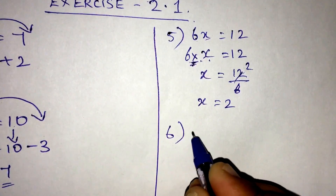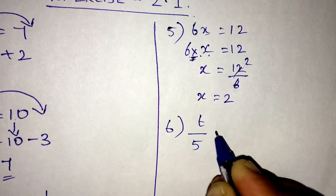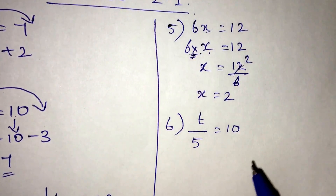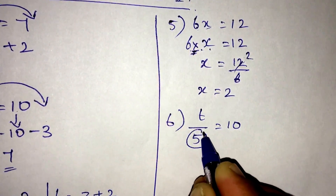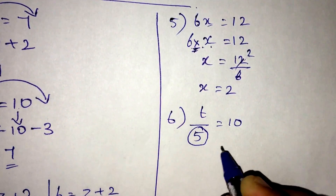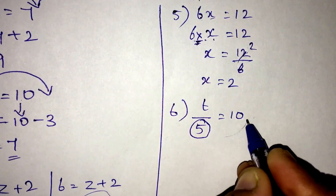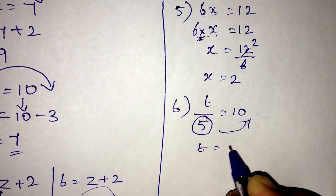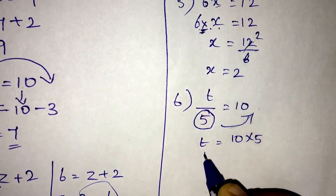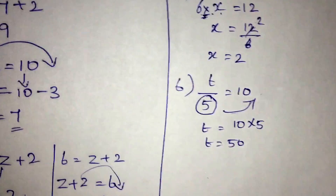Question number 6: t by 5 is equal to 10. Here the 5 is in the denominator, so when it goes to the other side it becomes multiplication. The value of t will be 10 into 5, so t equals 50.